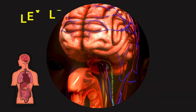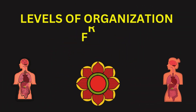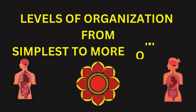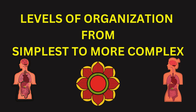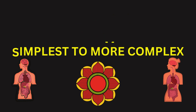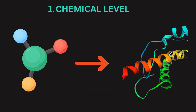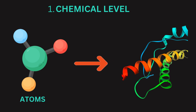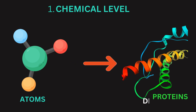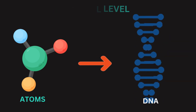The levels of organization, from the simplest to the most complex, are as follows. 1. Chemical level: involves the interaction of atoms and molecules to form complex structures such as proteins and DNA.